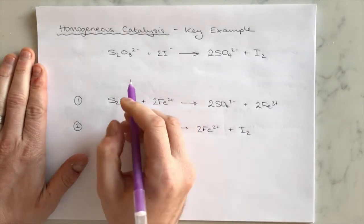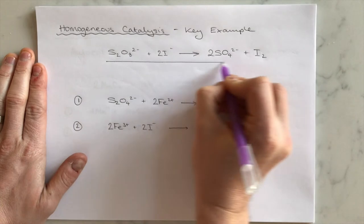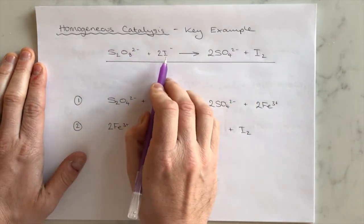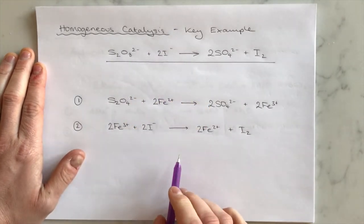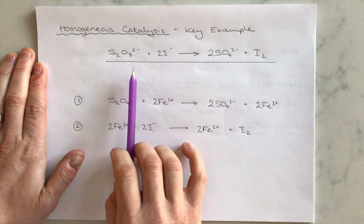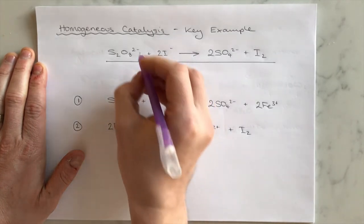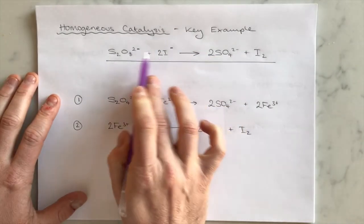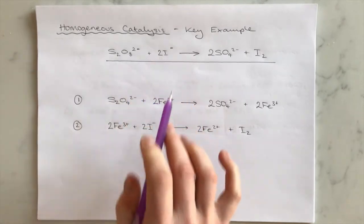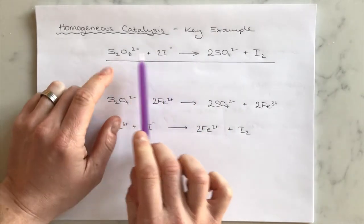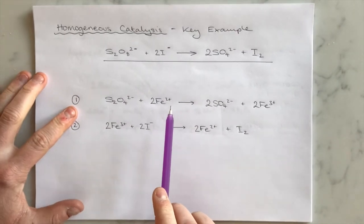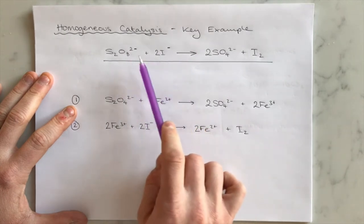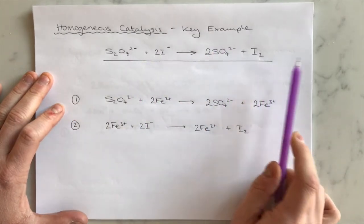The first example of homogeneous catalysis is this reaction: a peroxidisulfate ion reacting with iodide ions. The first question you could be asked is why this reaction has a very slow rate when uncatalysed. The answer is that it's a reaction between two negative ions — they repel one another, so the chance of a successful collision is slim. Both ions need a lot of energy for a successful collision, which is why we need to catalyse this reaction to produce sulfate ions and iodine.